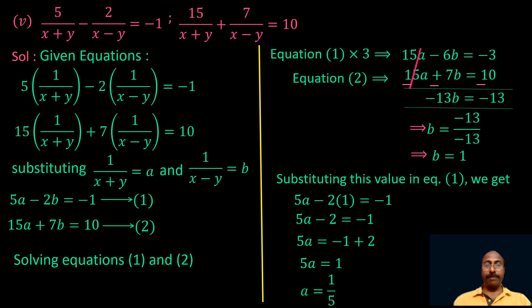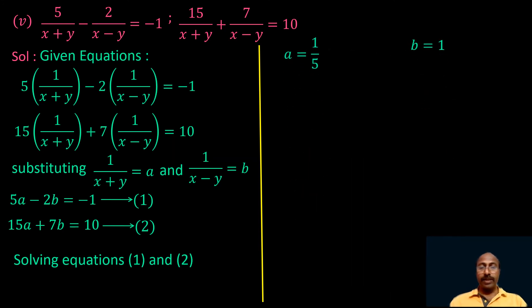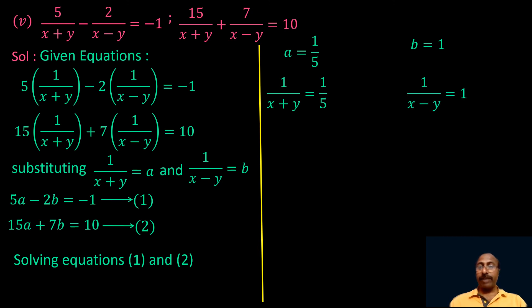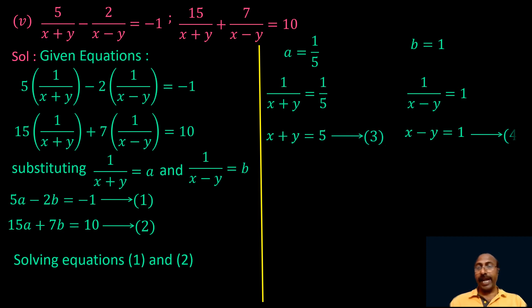We got the values of a and b, but we need x and y. Since a is 1 by (x plus y) and b is 1 by (x minus y), substituting gives 1 by (x plus y) equal to 1 by 5 and 1 by (x minus y) equal to 1. From these, we can write x plus y equal to 5 and x minus y equal to 1. Take these as equation 3 and equation 4.